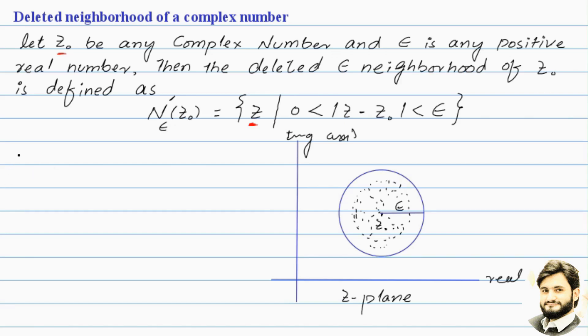We defined that epsilon neighborhood of z-naught is the set containing all those complex numbers such that whose distance from the point z-naught is less than epsilon.